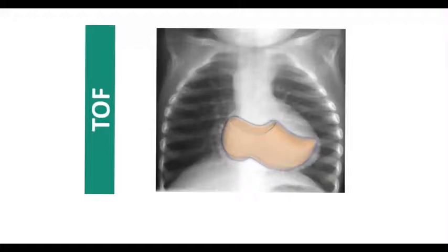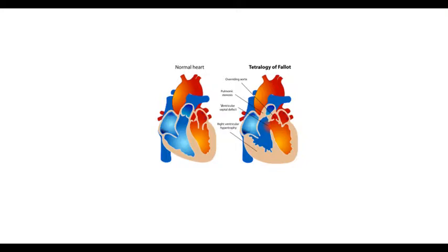This was always referred to on chest X-ray as a boot-like or shoe-like image of the heart when a patient has tetralogy of Fallot. You can see how someone cleverly has put a shoe in the chest X-ray to show that the apex comes out to one side, and when you look at the heart overall it almost looks like a shoe. I just got a kick out of that and thought I'd show you.